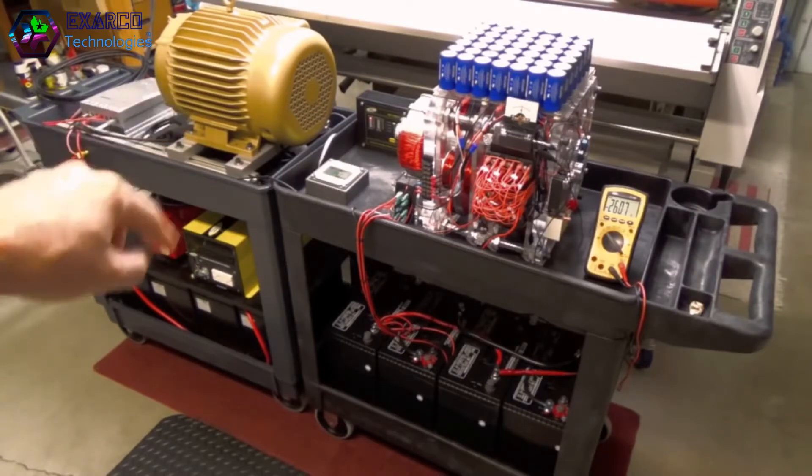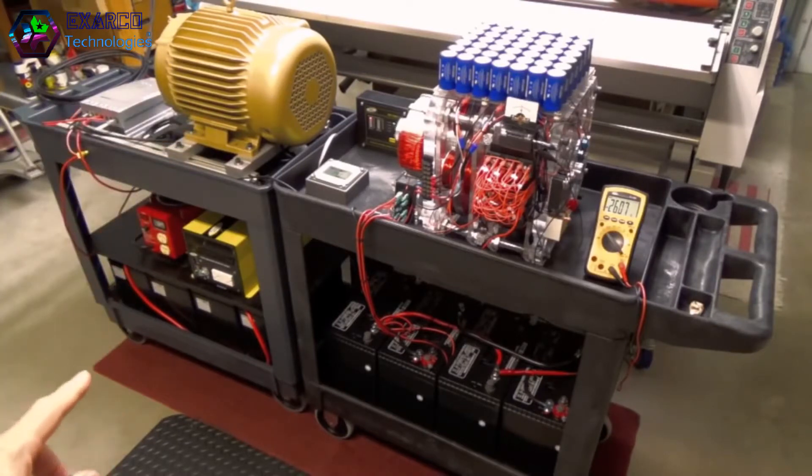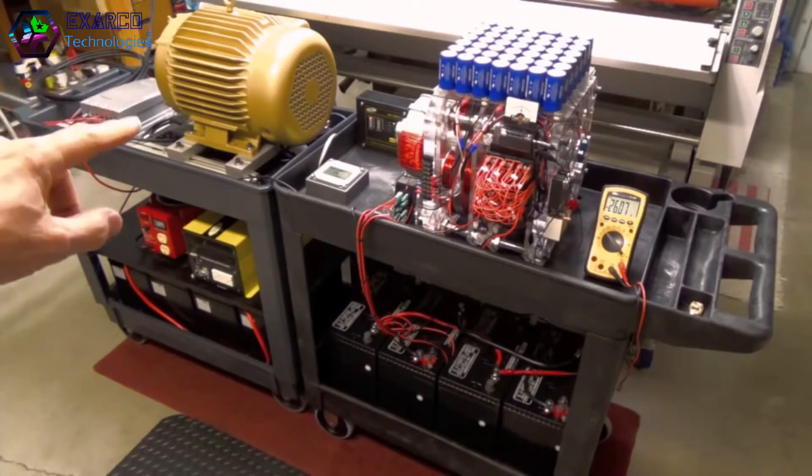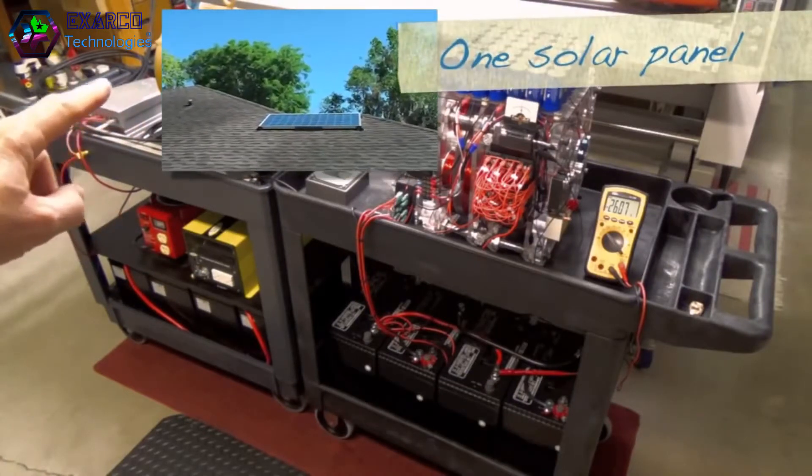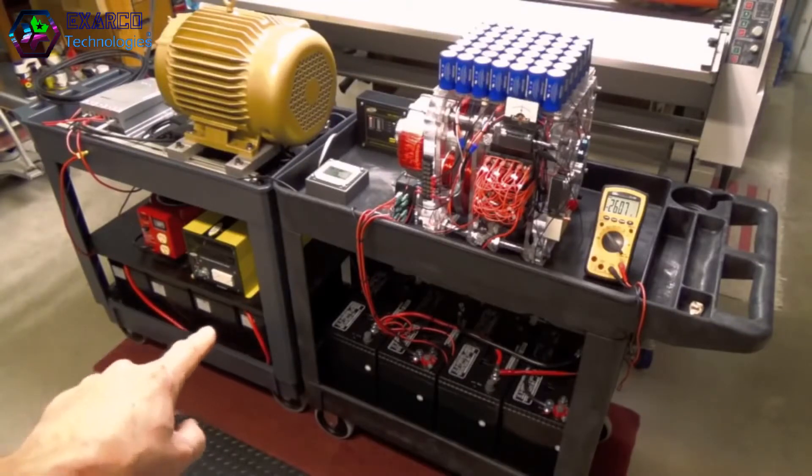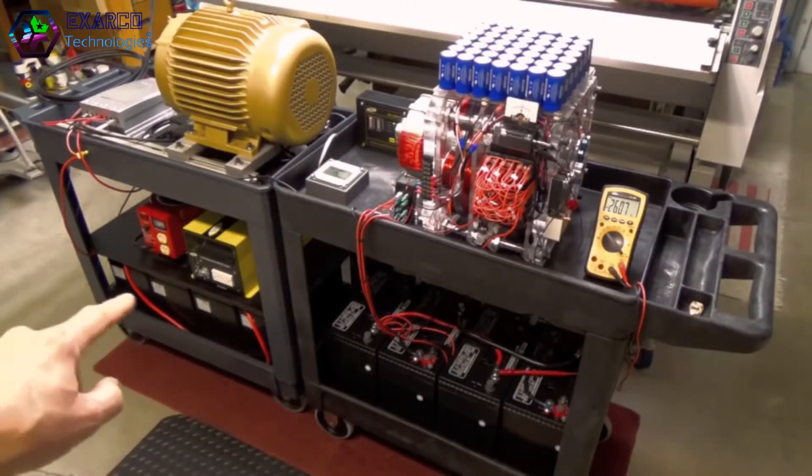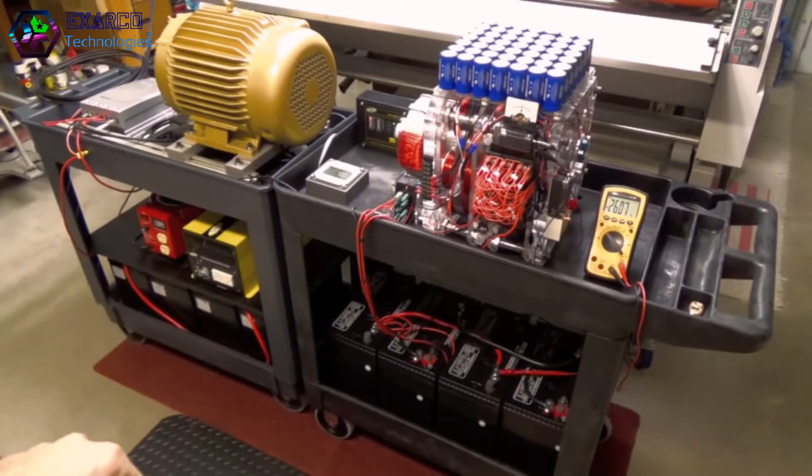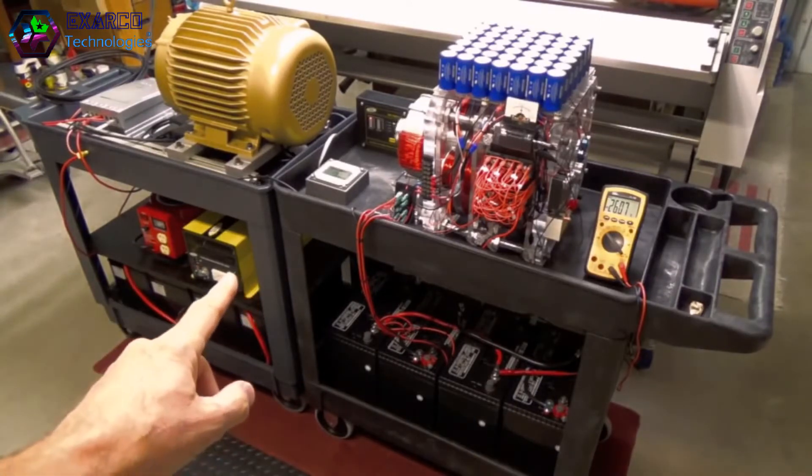I've got solar power coming in and there's the MPPT, and it charges up these four batteries here. These two here are in series, these are in series, and then those are in parallel for 24 volts. It's a 24-volt pure sine wave inverter.